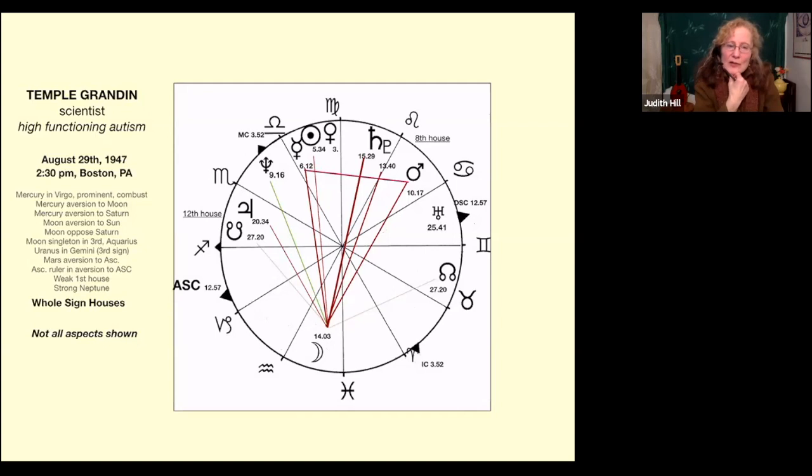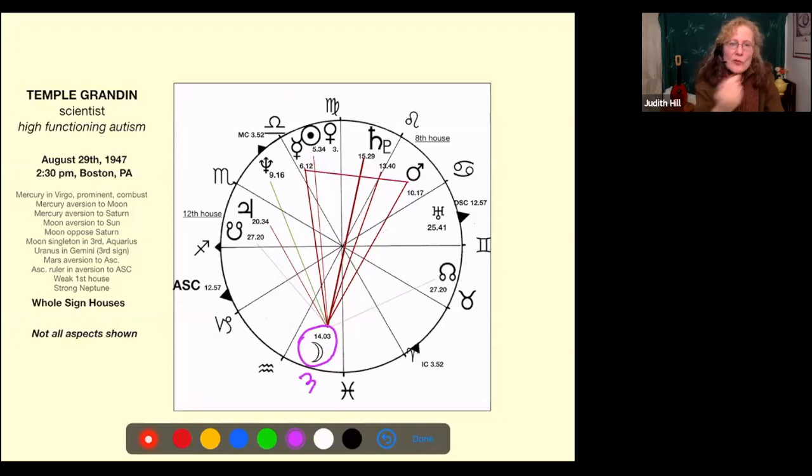The moon is isolated in the house of the mind, opposing Saturn, quincunx Mercury. So both Mercury and the moon have nothing to do with Saturn. Get out of here, Saturn.